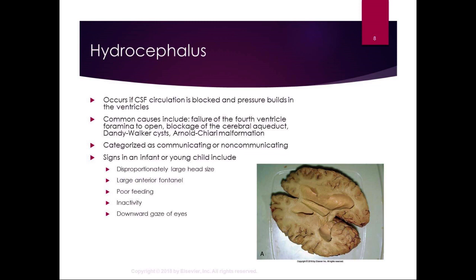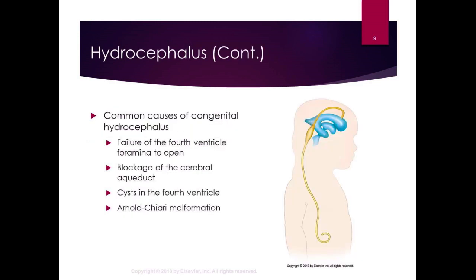Causes of acquired hydrocephalus include traumatic brain injury, intraventricular hemorrhage, subarachnoid hemorrhage, and diseases such as meningitis. There is also normal pressure hydrocephalus, generally seen in adults, which can involve a problem in CSF metabolism and is often idiopathic. Regardless of the cause, a common treatment is implanting a shunt with a one-way valve to drain the ventricle; the shunt runs all the way down into the peritoneum where the fluid is reabsorbed back into the system. In many cases shunts remain in place permanently.